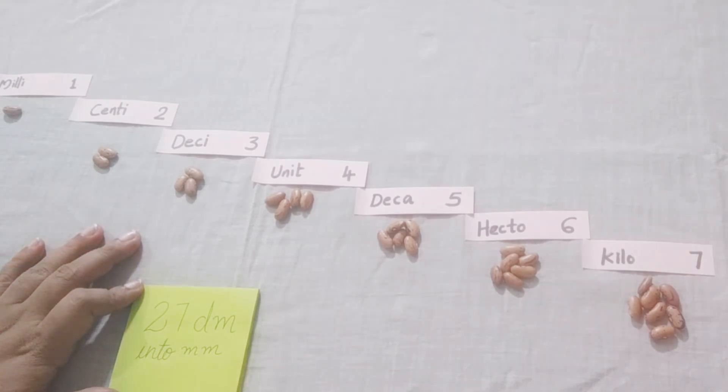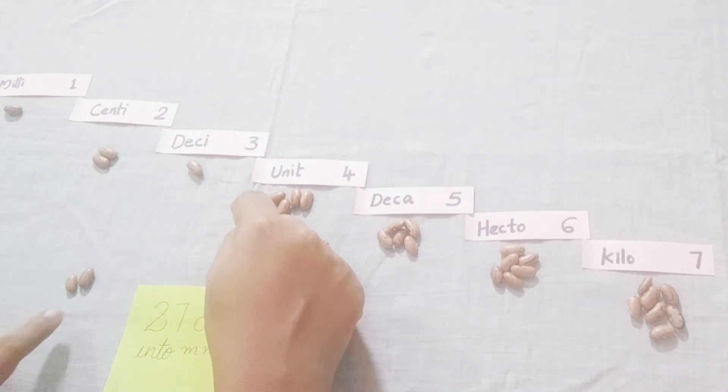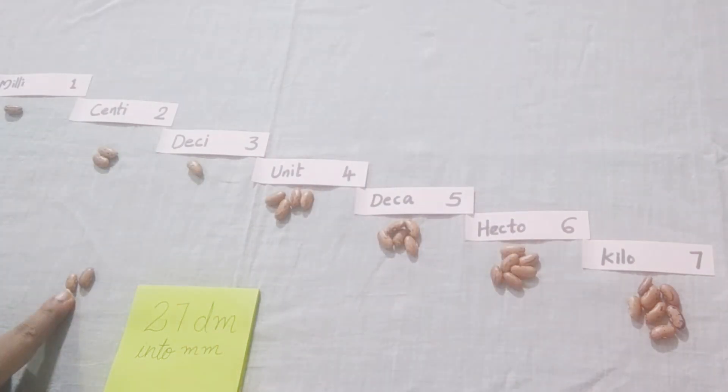In the place of milli, we have one. So now to make this one three, how many more beans do we need? We need two more. These two beans you consider as two zeros, so place them here. Two, seven, zero, zero is your answer. Two thousand seven hundred millimeters is equal to 27 decimeters.